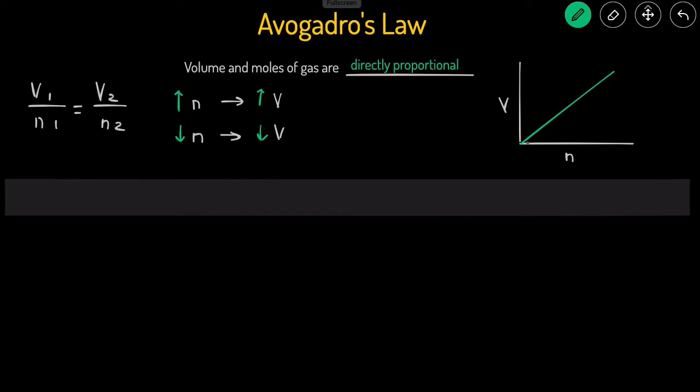And so the graph will look like this, where when the number of moles of gas increase, the volume increases. And when the number of moles decrease, then the volume will also decrease. This is the equation that you would use for an Avogadro's Law problem: V1 over N1 equals V2 over N2.